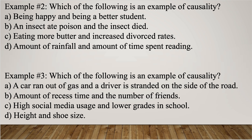Which of the following is an example of causality? Remember, we're looking at one variable causing another. The options are: being happy and being a better student; an insect ate poison and the insect died; eating more butter and increasing divorce rates; amount of rainfall and amount of time spent reading. I would go with option B — an insect ate poison. It makes perfect sense that the poison would cause the insect to die.